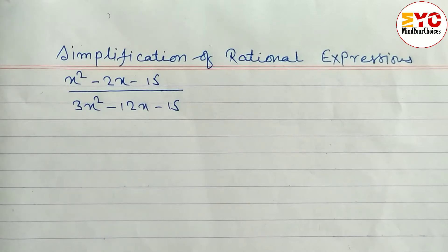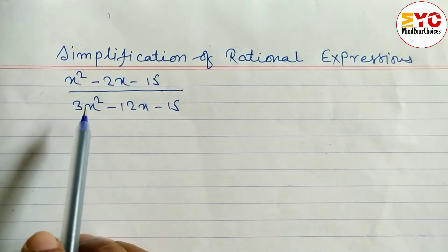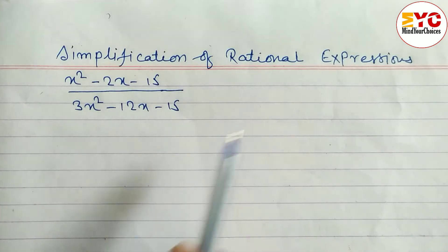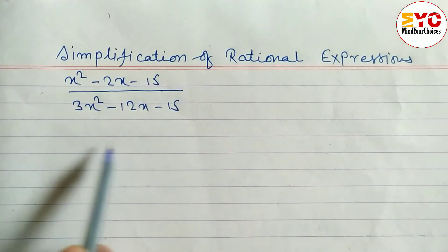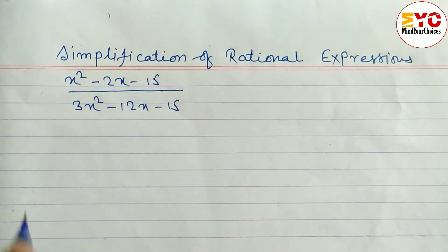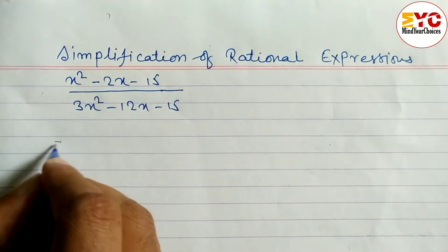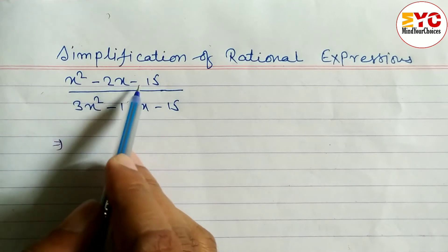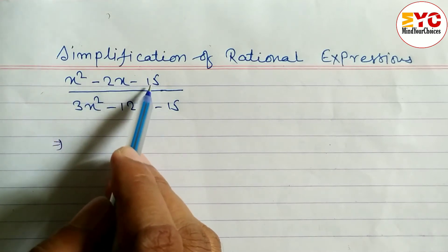Hello everyone, in this video we are going to learn how to simplify the rational expression. You can see here one question is given. Let's take a start. First of all, x squared minus 2x minus 15.